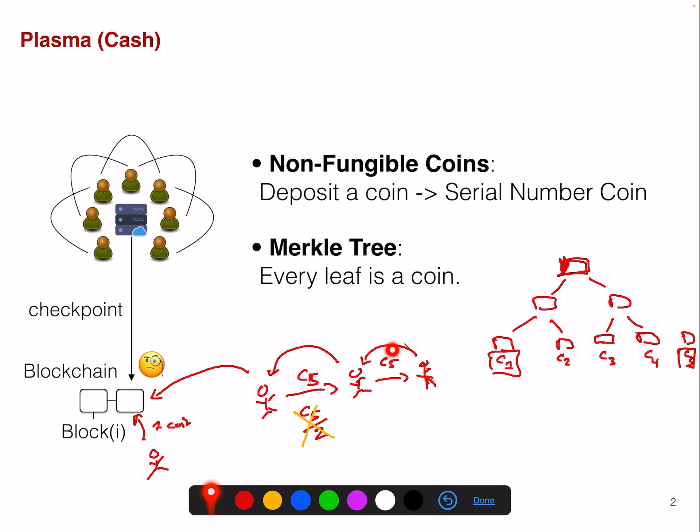The major drawback is that you cannot divide the coins further. So if you want to pay 2.5 bucks but you only have a 2 and a 0.5 coin, then you need to send both coins to the recipient. But overall, this is a very interesting concept.